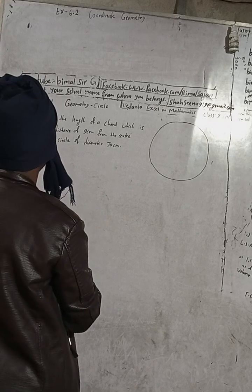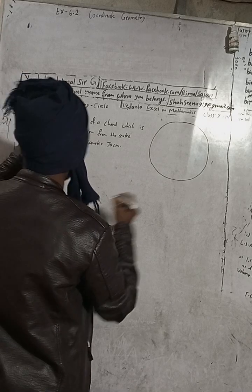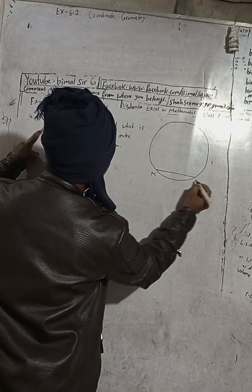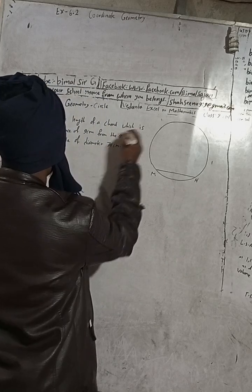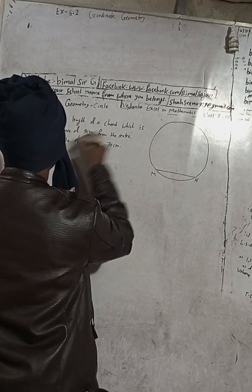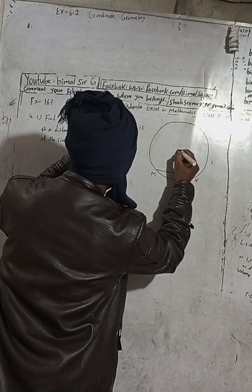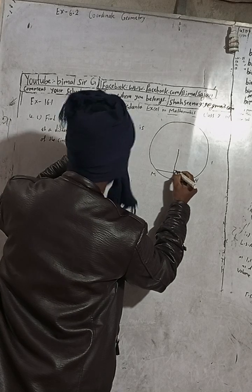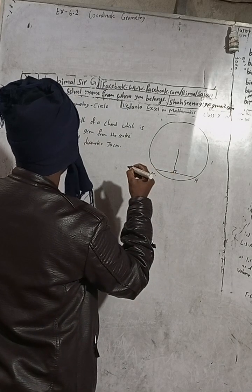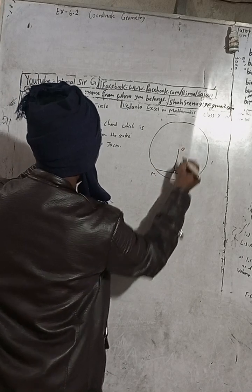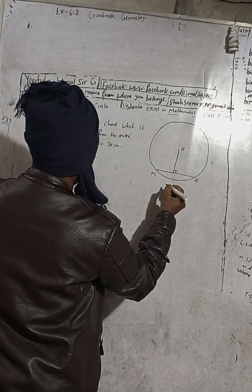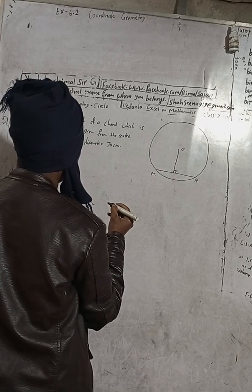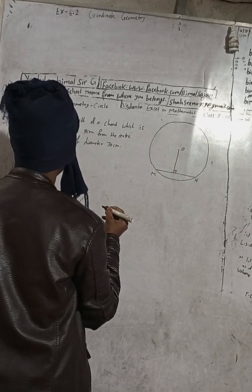Find the length of the chord. Suppose this is our chord — I will name it MN. MN is our chord, which is at a distance of 9 cm from the center. If this is the center, then 9 cm from here means this is a perpendicular. The distance is 9 cm. This is the origin O, and this is the diameter of the circle.